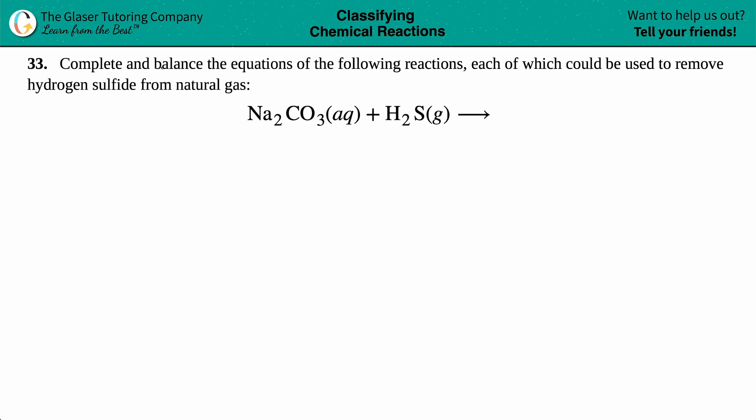Number 33. Complete and balance the equations of the following reactions, each of which could be used to remove hydrogen sulfide from natural gas. In this case we have to complete and balance this equation where we have sodium carbonate, which is Na₂CO₃ aqueous, plus hydrogen sulfide, H₂S gas, and we just have to find out what the products are.